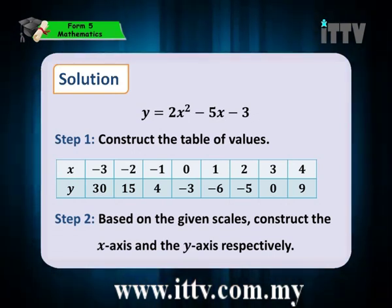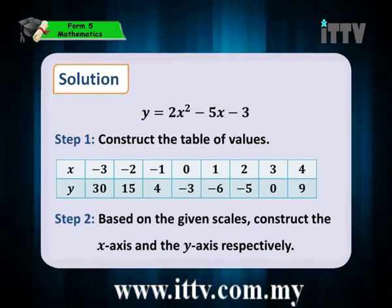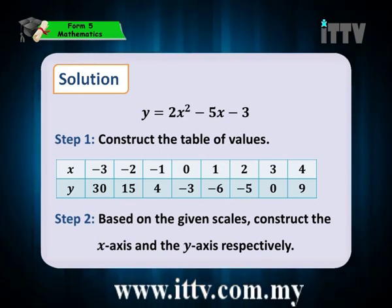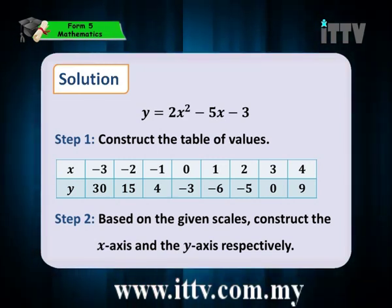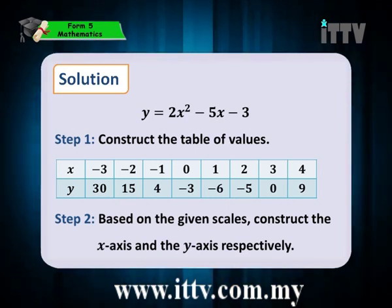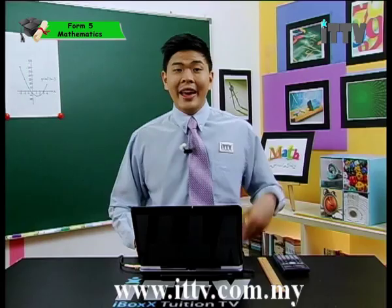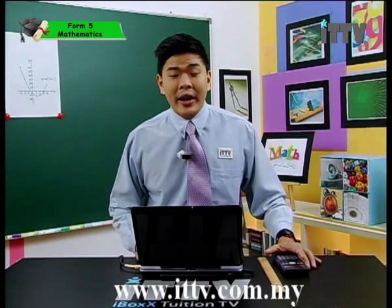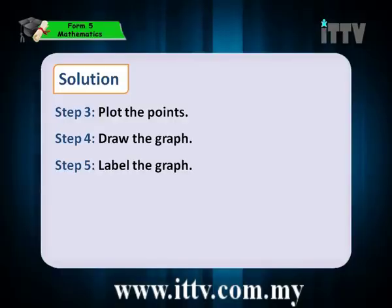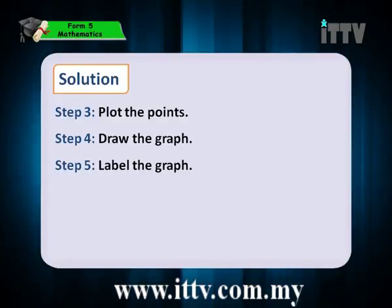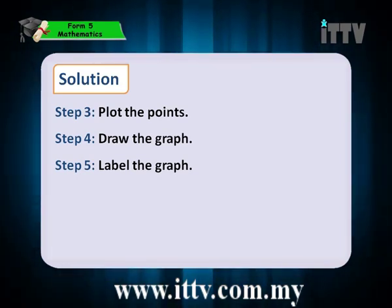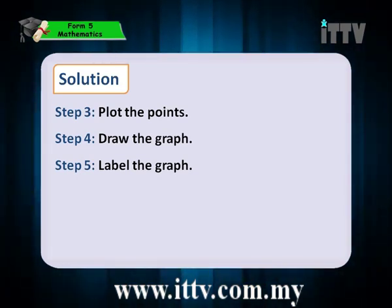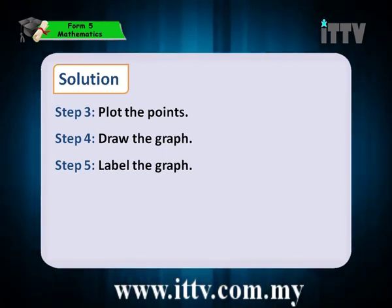After you have all those values of x and y, Step 2: based on the given scales, construct the x-axis and the y-axis respectively. Step 3: plot the points — all those coordinates must be placed on the graph. Step 4: draw the graph. And Step 5: label the graph.